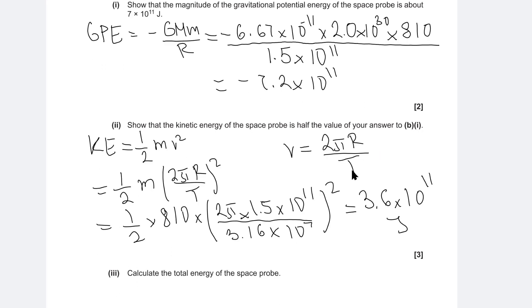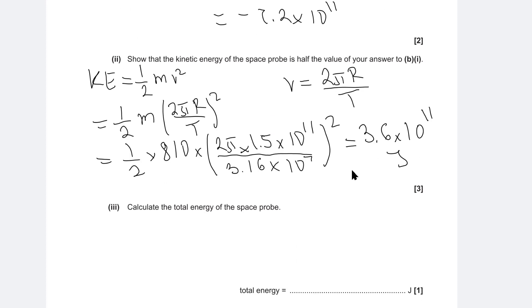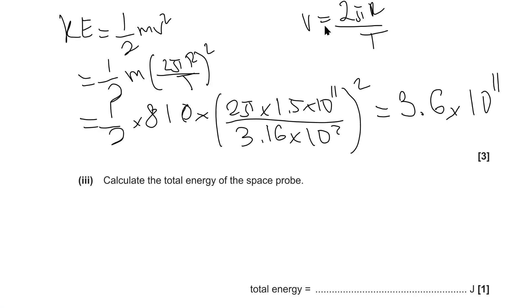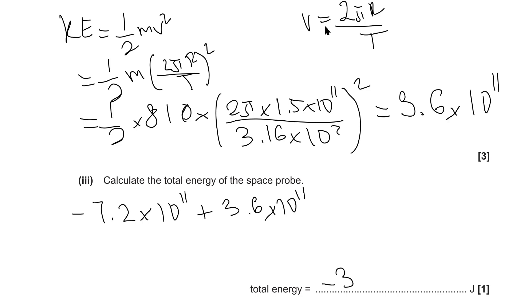This is half the value from above, so we know it's correct. Now calculate the total energy of the space probe. Notice this question has a trick — because GPE and KE have different signs, we need to add them: minus 7.2×10¹¹ plus 3.6×10¹¹, giving a total energy of minus 3.6×10¹¹ joules.